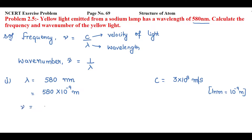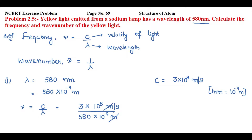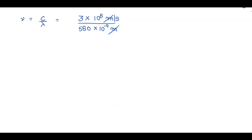Putting the values into the formula: frequency nu equals c by lambda, so that is 3 × 10⁸ meters per second divided by 580 × 10⁻⁹ meters. The meter units cancel, leaving the unit as second inverse, which is the unit of frequency. Now let's solve the powers: 10⁻⁹ in the denominator moves to the numerator as 10⁹.